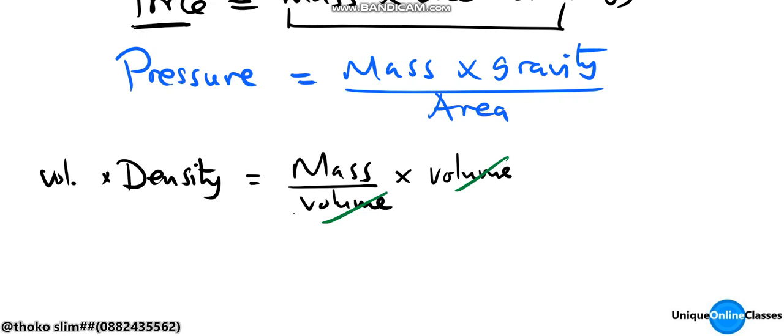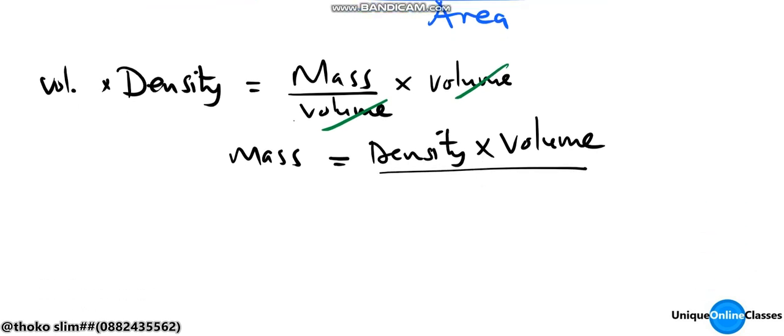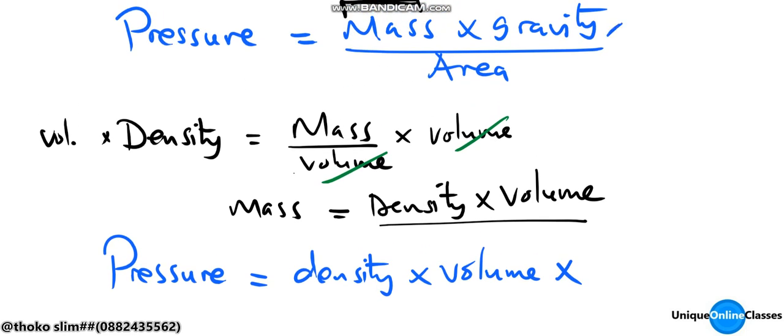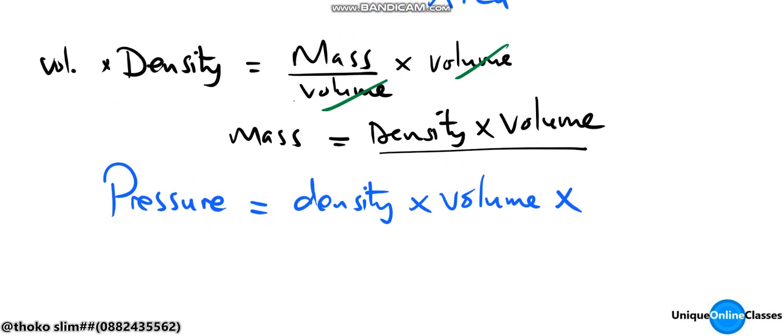Mass is equal to density times volume. Now we can substitute this into our pressure formula: pressure is equal to density times volume times gravity, then over area.